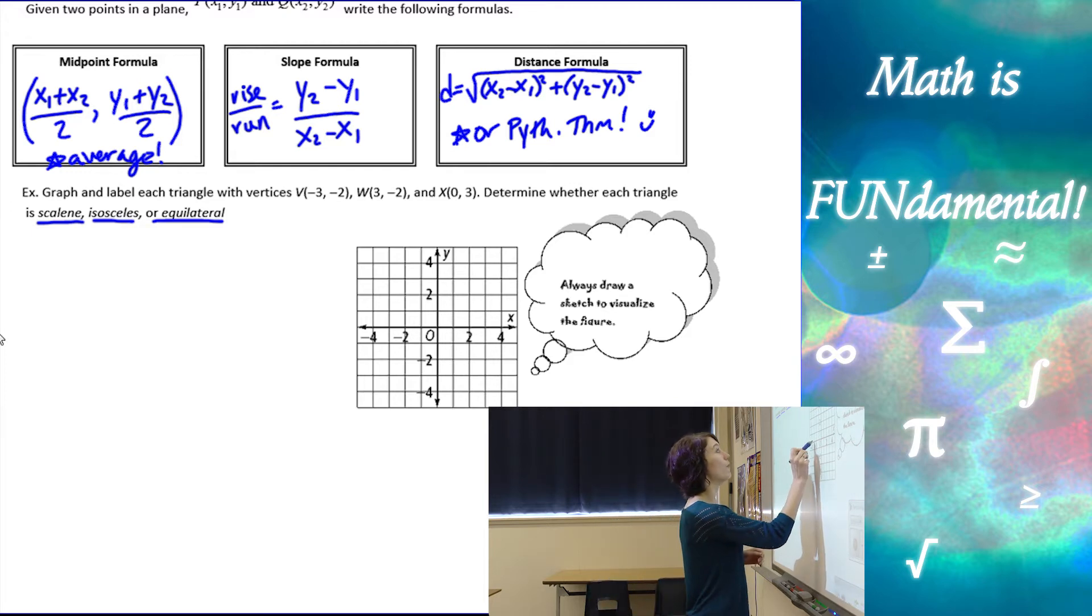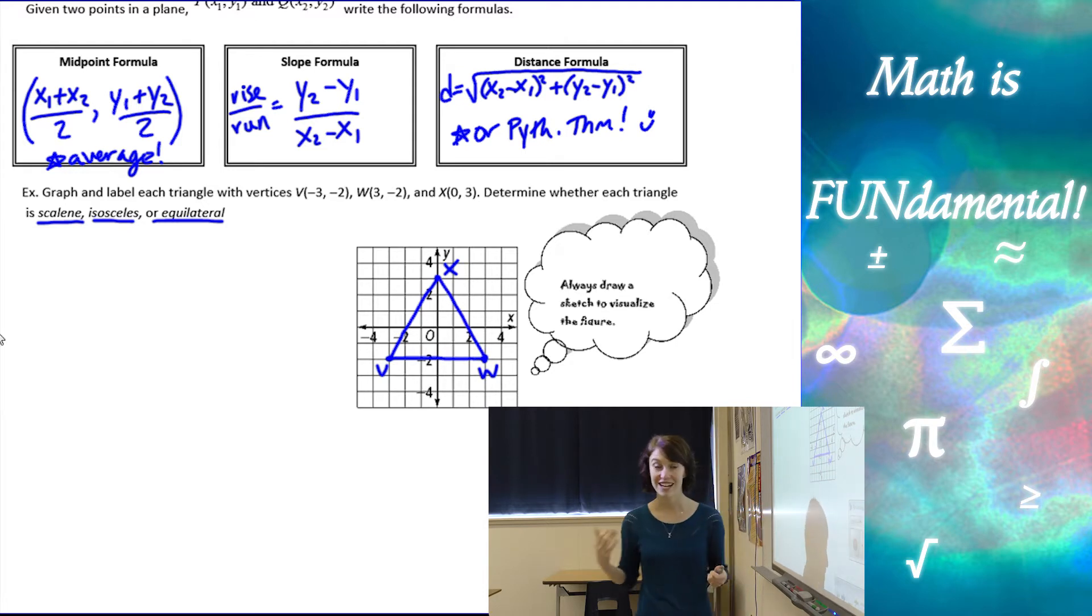So we have negative 3, negative 2, which is v. We have positive 3, negative 2, which is w. And we have 0, 3, which is x. So if I connect all these, and we look at the graph, you might be able to take kind of an educated guess at which type of triangle it is. But in order to be absolutely sure what triangle it is, we have to find the lengths of those sides.